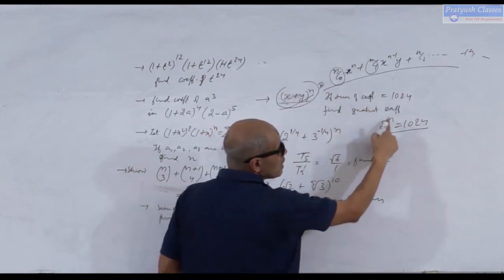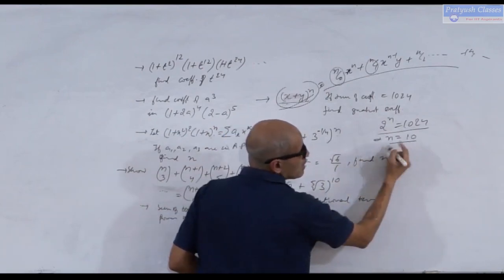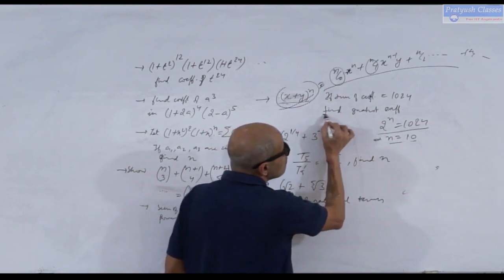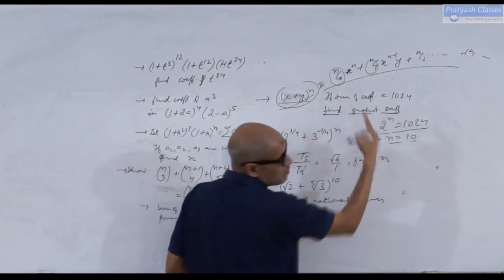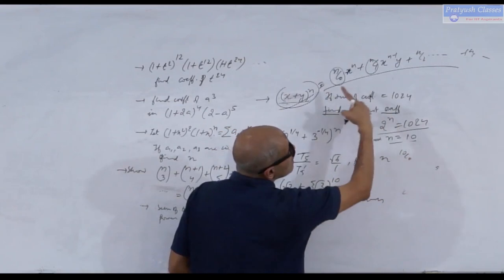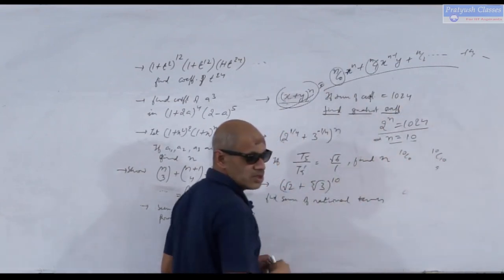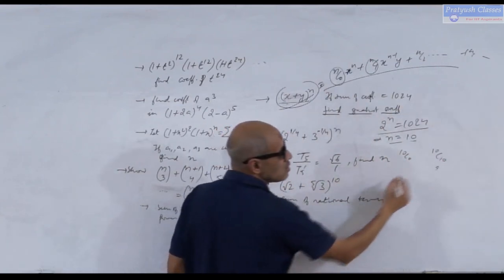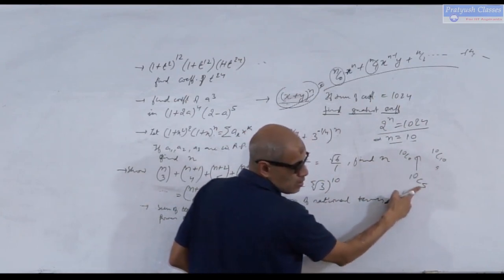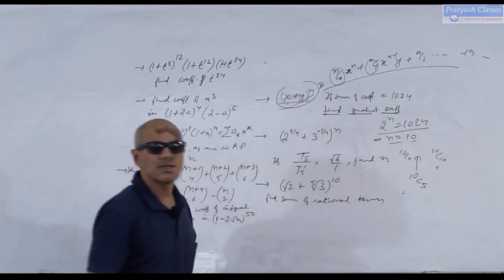From 2ⁿ = 1024, we recognize that n = 10. Now the question asks: find the greatest coefficient among 10C0, 10C1, ..., 10C10. The greatest binomial coefficient occurs at the middle term. Dividing 10 by 2 gives 5, so the answer is 10C5.